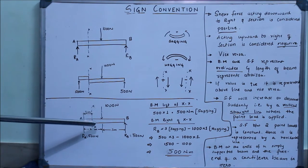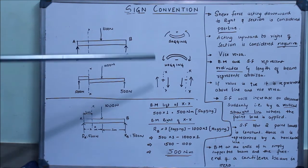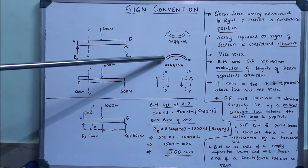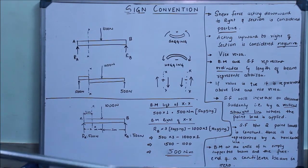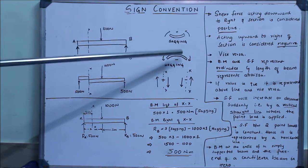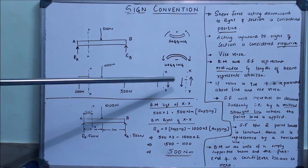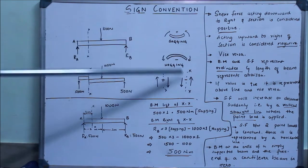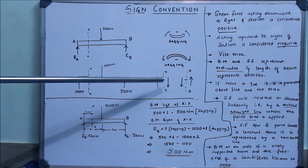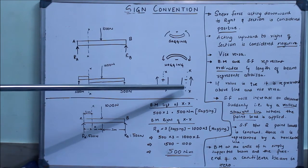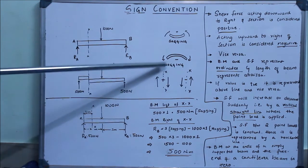Now there are two more effects: the sagging bending moment effect and the hogging bending moment effect. These two are considered when we draw the bending moment diagram. If the forces acting on the beam cause the beam to sag, then you take it as positive. And if the forces acting on the beam cause the beam to hog, then you take it as negative. I will explain this in the next example. I hope you understood the sign convention used for shear forces.